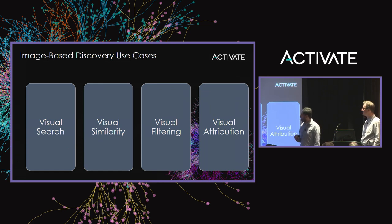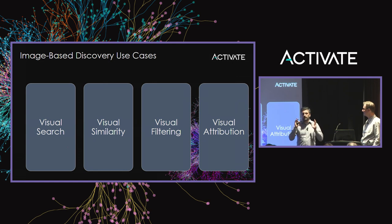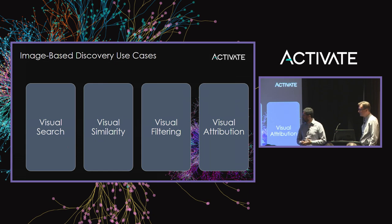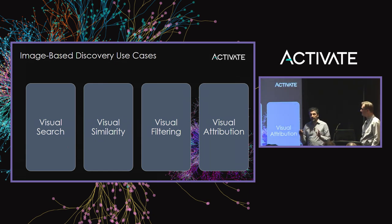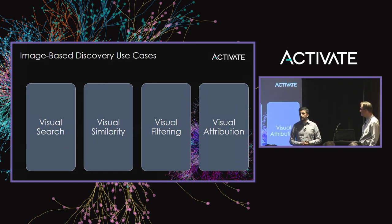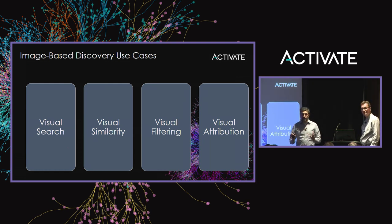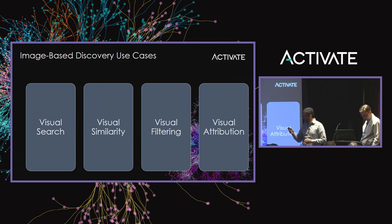The image-based discovery use cases can be chunked into four big groups: visual search, similarity, filtering, and visual attribution. I'll show some screenshots. The disclaimer is that not everything you'll see is in production right now — some are just prototypes. But the use case we're going to present is in production, so I encourage you to go to our mobile website and give it a try.